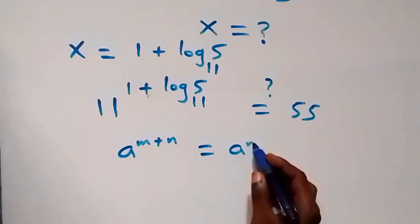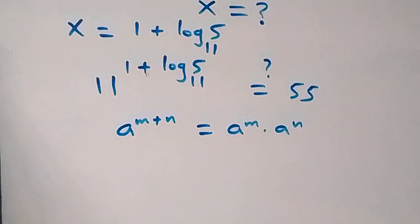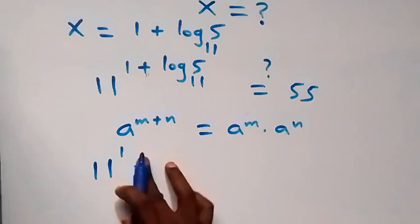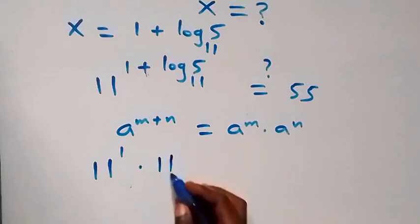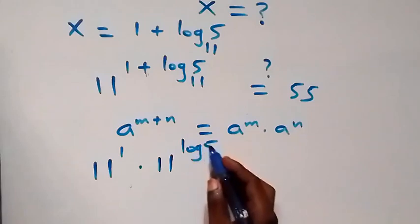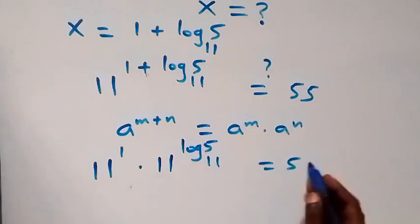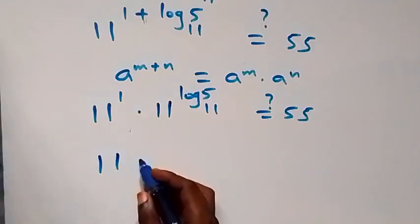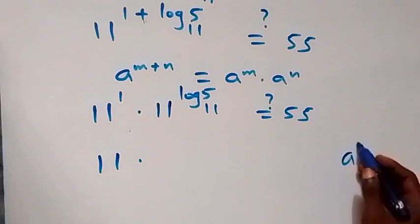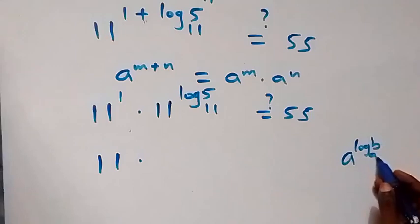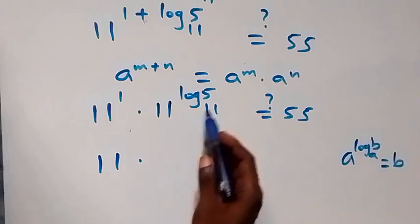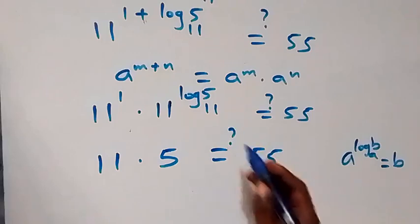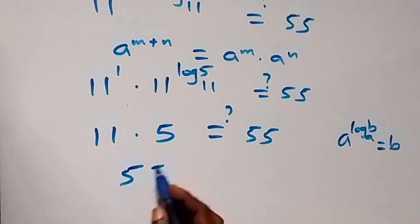We separate this and we have 11 raised to power 1, times 11 raised to power log 5 to base 11, equals to 55. Then 11 raised to power 1 is still 11. From the law of logarithms, a raised to power log b to base a is the same as b, so this becomes 5. Therefore 11 times 5 equals 55, which is equal to 55, and the left hand side equals the right hand side.